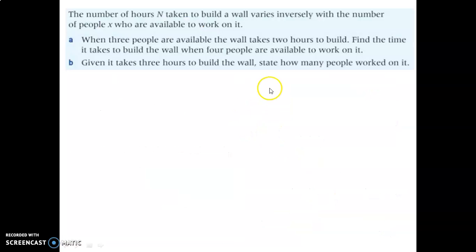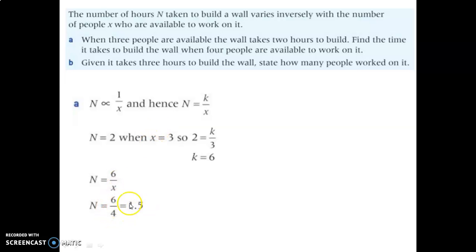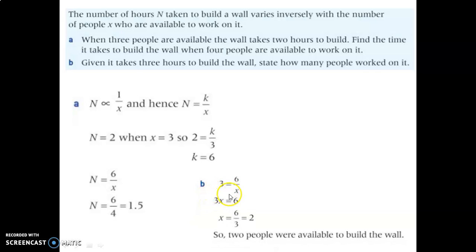Here's another one — try this out. This one is also inverse. So we have an inverse relationship between the hours to build and the number of workers. It gave us values of n equals 3, which allowed us to solve for k being 6. Then we have our model: n equals 6 over x. It's inverse. Finally, you can put 4 people back into that model and see how many hours it would take — and it's 1.5. Now try part B. In B, we put in the number of hours given to us. Hours goes in and workers is unknown, so we solve that backwards and find out two workers.